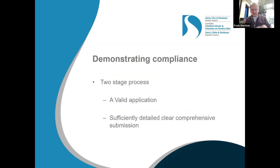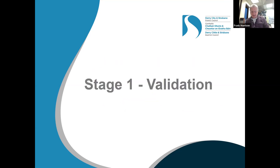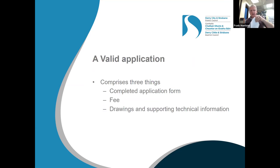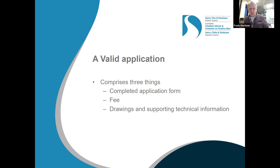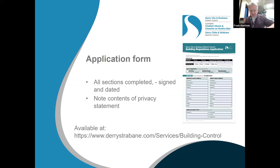In terms of demonstrating compliance, it's a two-stage process. There's a full plan application, and then there has to be a sufficiently detailed, clear, comprehensive submission. Looking at stage one validation — what constitutes a valid application? A valid application comprises three things: a completed application form with all the necessary information on it, the correct fee, and drawings and supporting technical information with sufficient level of detail to enable a proper assessment of the proposed works.